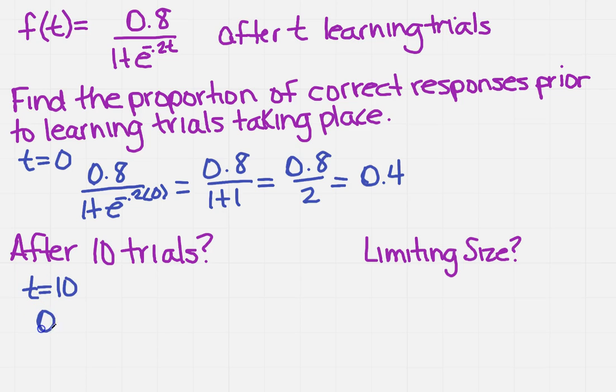I'm going to plug in 10 everywhere there's a t. So I'm going to get 0.8 over 1 plus e to the minus 0.2t, and I just said that t is 10. When I simplify this, I get 0.8 over 1 plus e to the, well, if I multiply by 10, it's negative 2.